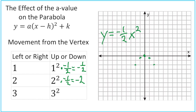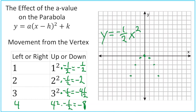Each time we're going back to the vertex. Three squared times negative one-half is nine times one-half, which is negative four and a half. So we get another point: over three, down four and a half. Since it's a fraction, if we go left or right four spaces, that would be four squared times negative one-half, which is 16, and half of 16 is eight. So we go left and right four spaces, then down eight. Connecting those points, we get our parabola y equals negative one-half x squared.